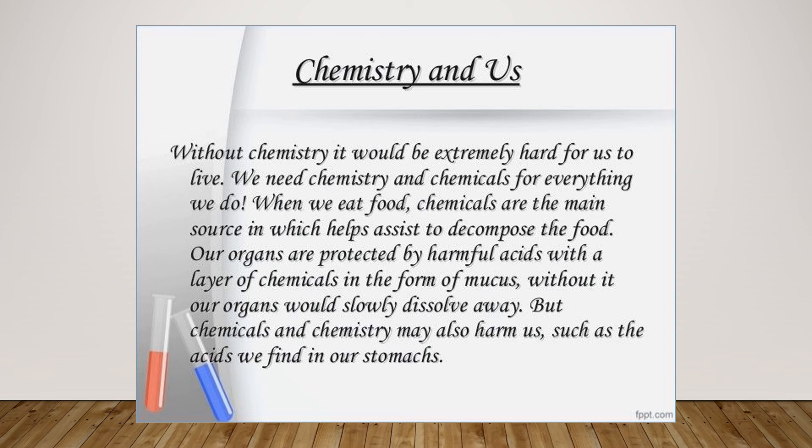Our organs are protected by harmful acids with a layer of chemicals in the form of mucous. Yes, mucous is the layer which is protecting each and every organ of your body. And that mucous is made up of certain atoms and molecules. Without it, our organs will slowly dissolve away. But chemicals and chemistry may also harm us. Such as the acids we find in our stomachs sometimes cause acidity. And some acids are corrosive to skin. So the people who are working in chemical industries must use masks, gloves and spectacles to protect themselves from chemical hazards.